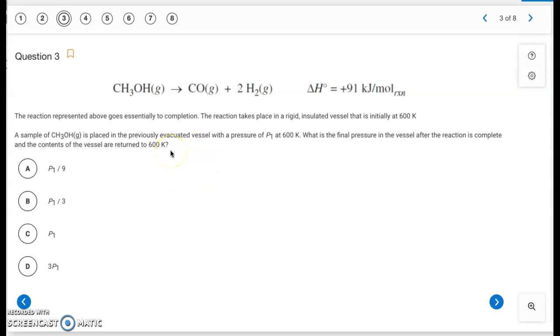Alright. So here's our balanced equation. So we have a sample of CH3OH placed in a previously evacuated vessel with a pressure of P1. It doesn't give us a number. It just tells us we have P1 to start off with at 600 Kelvin. What is the final pressure in the vessel after the reaction is complete and the contents of the vessel are returned to 600 Kelvin?